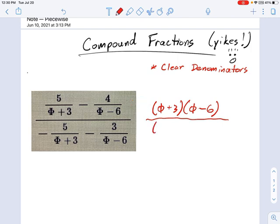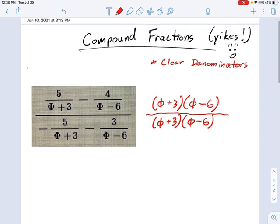And then on the bottom, of course, I'm going to multiply by the same thing. Now, if you have some compound fraction sometime with more than two factors in it, or more than two types of denominators—see, I only have two, phi plus 3 and phi minus 6. But if you had a compound fraction with 3 or 4 or more denominators in it, you would just keep getting a longer and longer crazy one. But I think the point will be well illustrated here.